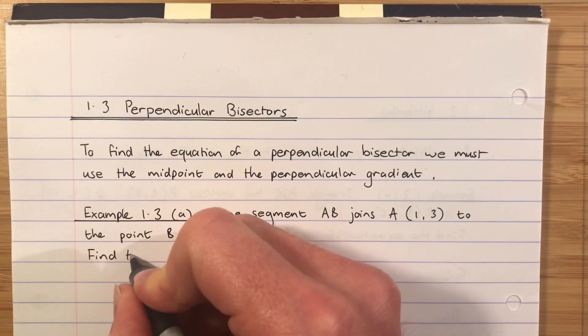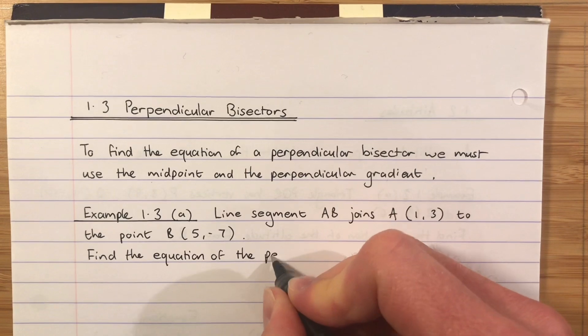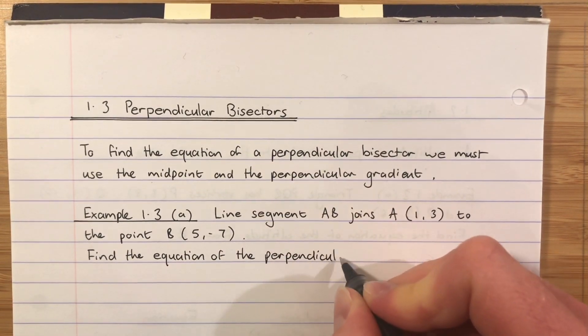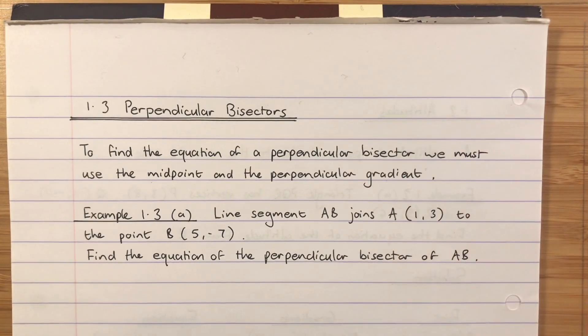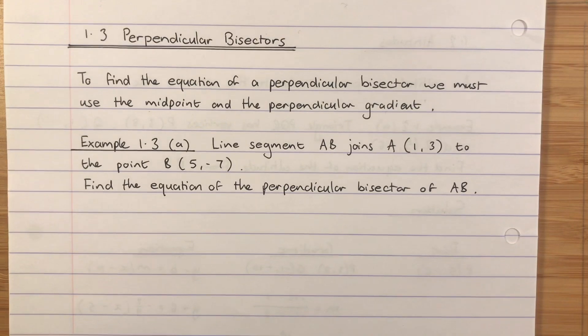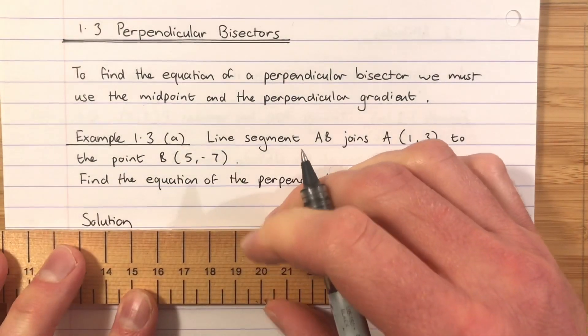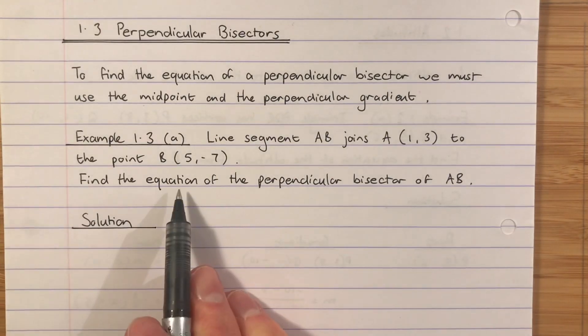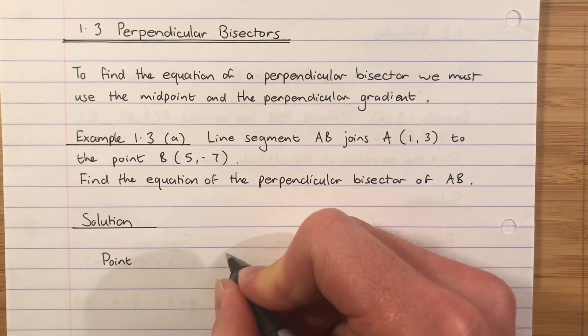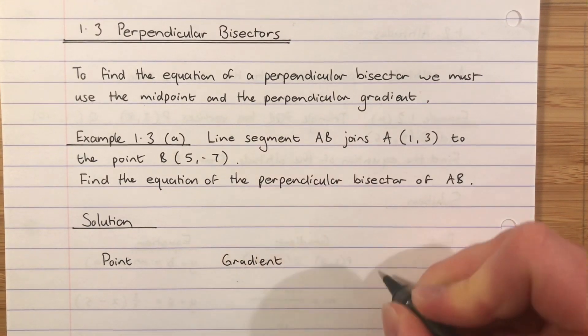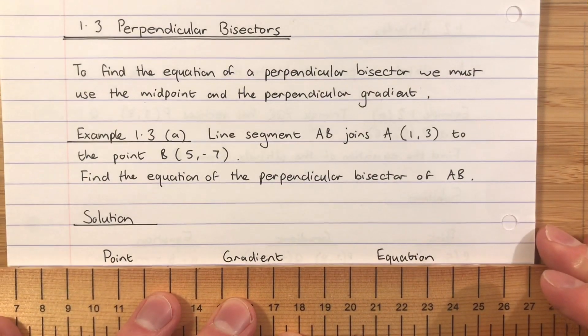And we're going to find the perpendicular bisector. So the question will be, find the equation of the perpendicular bisector of AB. Okay, so let's do our solution. First things first, this question is asking us to find the equation of a straight line. What do I need to find the equation of a straight line? I need a point, I need to find the gradient, and then I can find the equation.